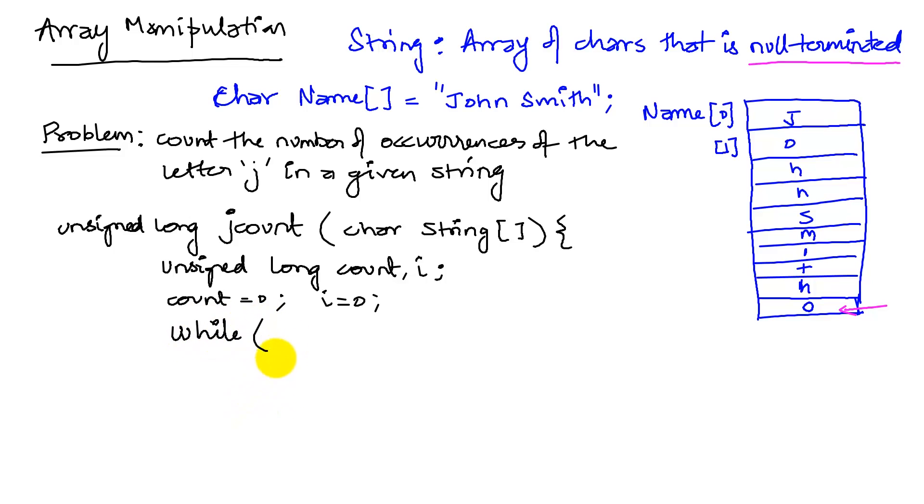A while loop. So I'm going to say while the item I'm looking at, because I'm looking at the ith item. So I'm going to say while string of i is not equal to, that's a not equal to with an exclamation followed, is not equal to zero.